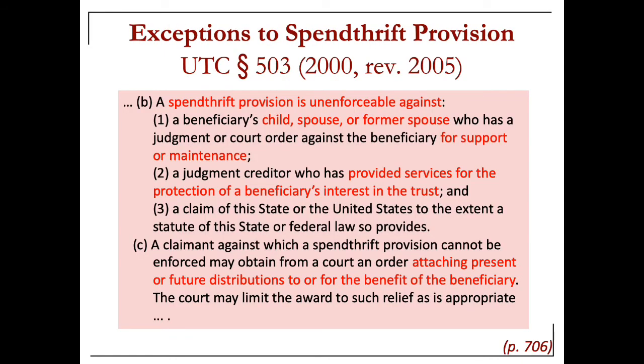Exceptions to the spendthrift provisions: the UTC provides that spendthrift provisions are not enforceable against children, spouses, or former spouses for support or maintenance — so again, child support or alimony. There are also some additional protections, like for a judgment creditor who has provided services for the protection of the beneficiary's interest in a trust, which is usually an attorney owed attorney fees.